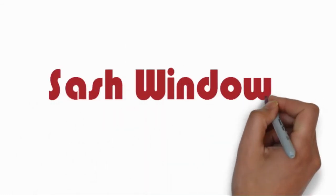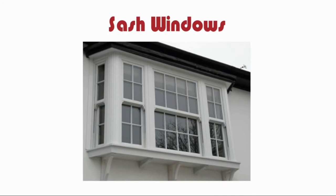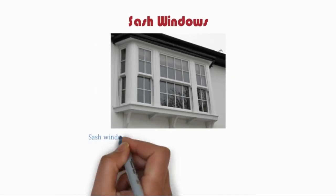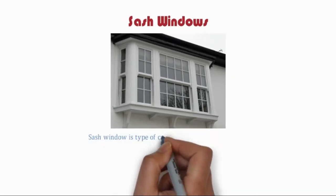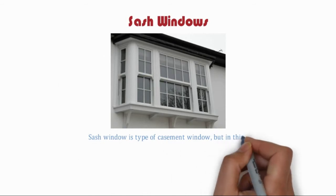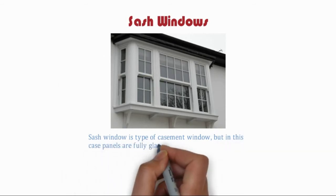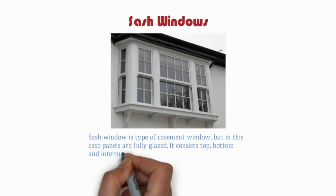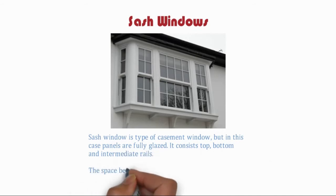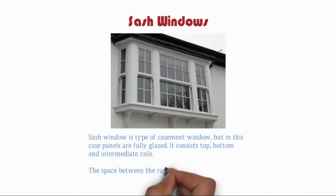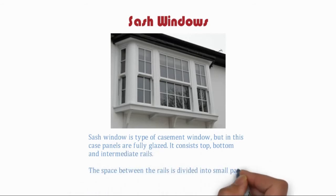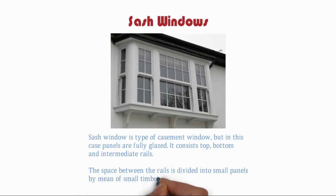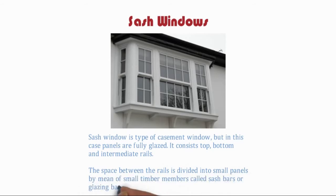Sash windows are a type of casement window, but in this case the panels are fully glazed. They consist of top, bottom, and intermediate rails. The space between the rails is divided into small panels by means of small timber members called sash bars or glazing bars.